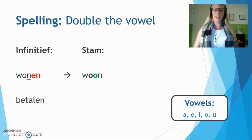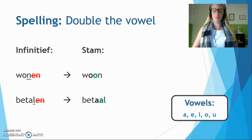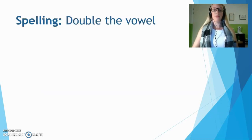Let's have a look at a longer word: betalen. First thing you do is remove -en. At the end of what is left, we have only one consonant — l. So that means we have to double the vowel that comes before the l, which is the a. Double the a, and you have your stam: betaal. Going back to the verbs from before — helpen, for example — removing -en gives help, which has two consonants at the end: l and p. So you don't double the vowel.